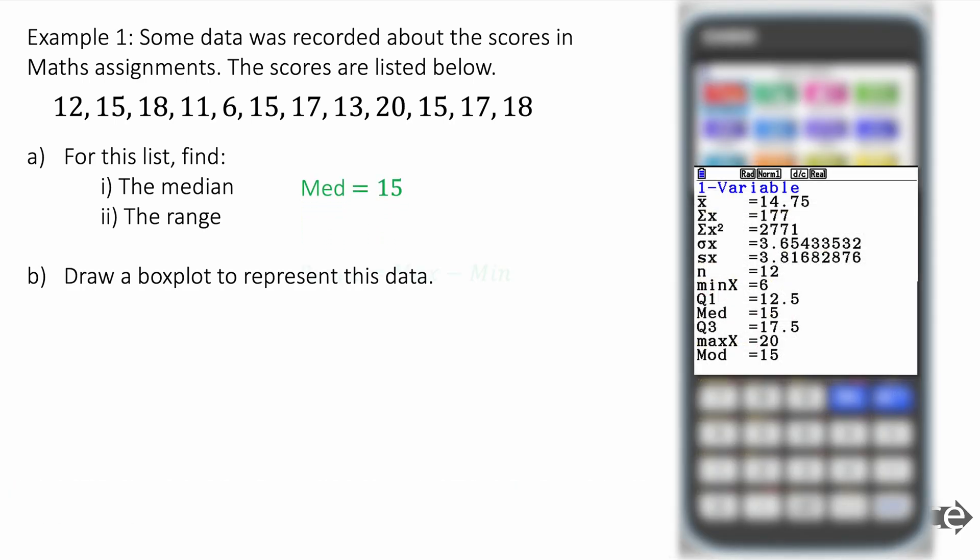Now it looks like this, the other information looks like this and it tells us the median is 15. And it also tells us the range by doing the maximum minus the minimum. The max from the GDC is 20. That's also kind of obvious from just looking at the list. And the minimum is 6. 20 minus 6 is 14. So the median is 15. The range is 14.